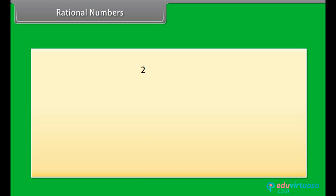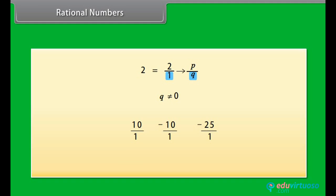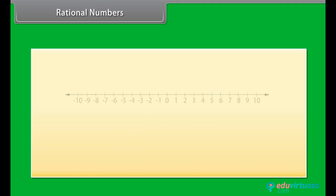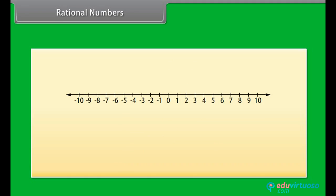Is 2 a rational number? Yes, 2 is a rational number because it can be written in the form P by Q, and here Q is 1, which is not equal to 0. In the same way, 10, minus 10, minus 25, etc. are also rational numbers. Therefore, we can say that the rational numbers include natural numbers, whole numbers, and integers.